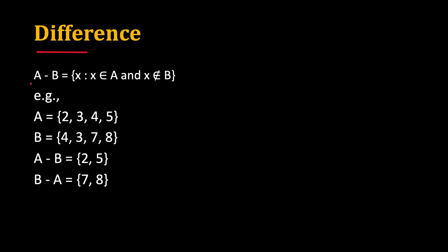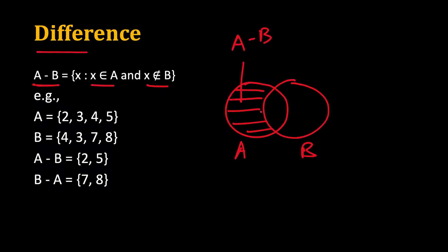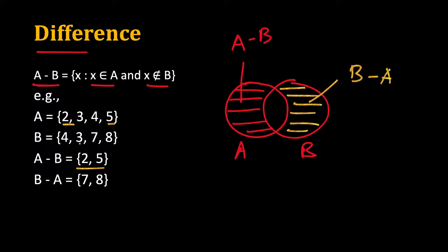The third operation is difference, denoted by the minus sign. A minus B means all elements present in A but not in B. With A = {2, 3, 4, 5} and B = {4, 3, 7, 8}, in the Venn diagram A minus B is the part of A that does not overlap with B — so {2, 5}. Similarly, B minus A is the region only in B, giving {7, 8}, since 3 and 4 are present in both.